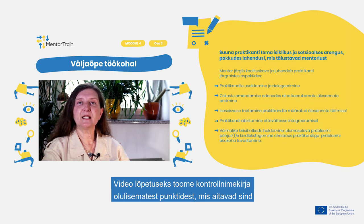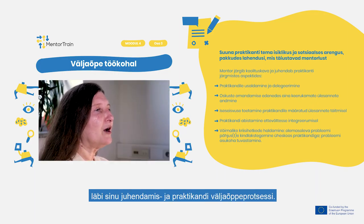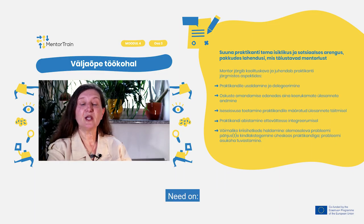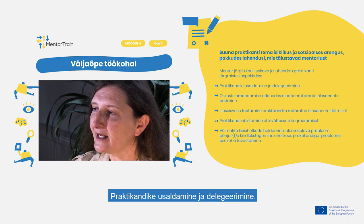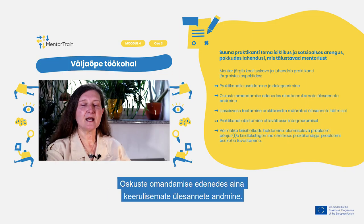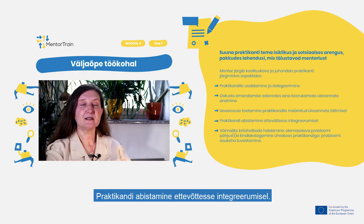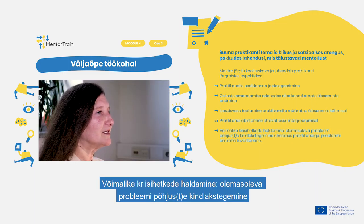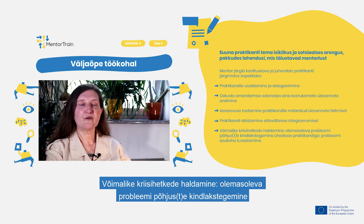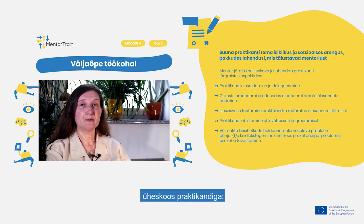We conclude this video with a checklist of some key highlights that will help you throughout your mentoring and apprentices' training process. Those are: entrusting and delegating to the apprentice, assigning more difficult tasks as they progress in the acquisition of skills, fostering autonomy in the performance of assigned tasks, helping the apprentice integrating in the company, and managing possible crisis moments.